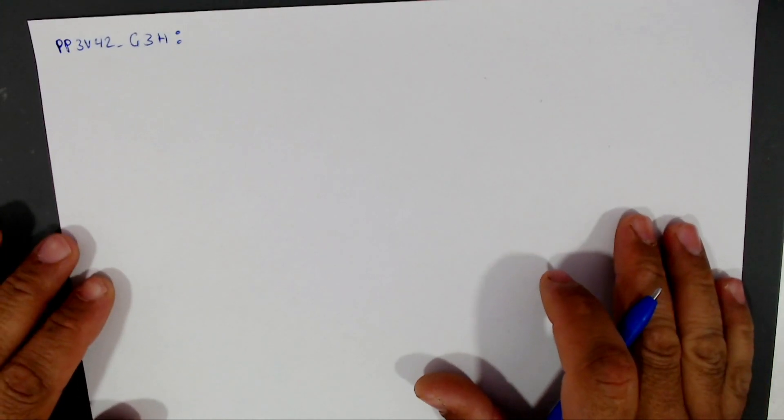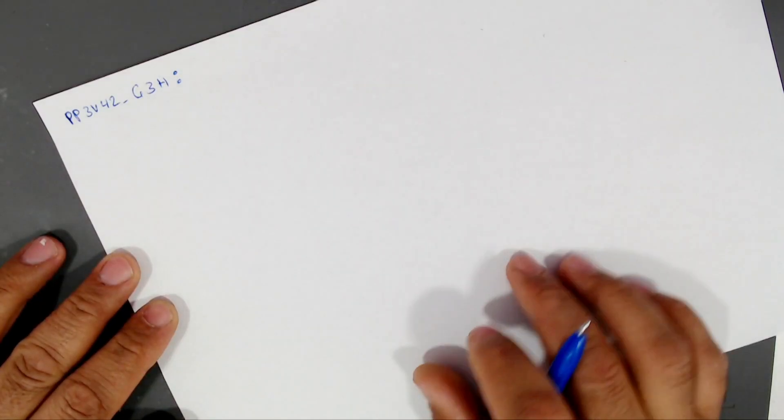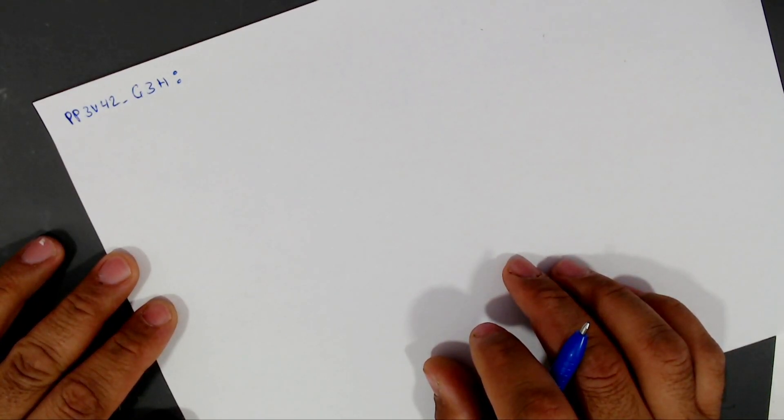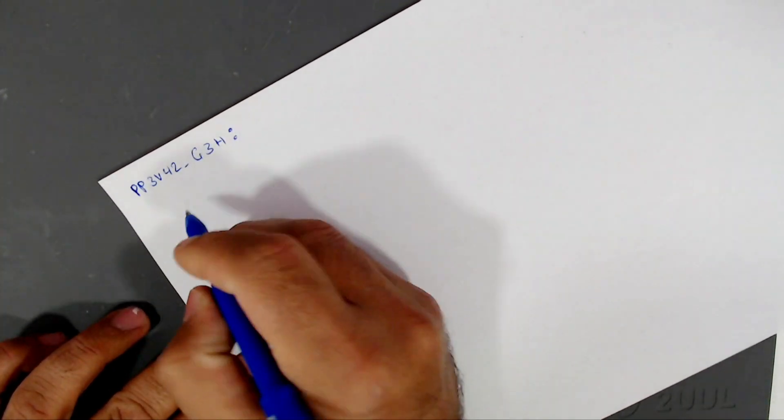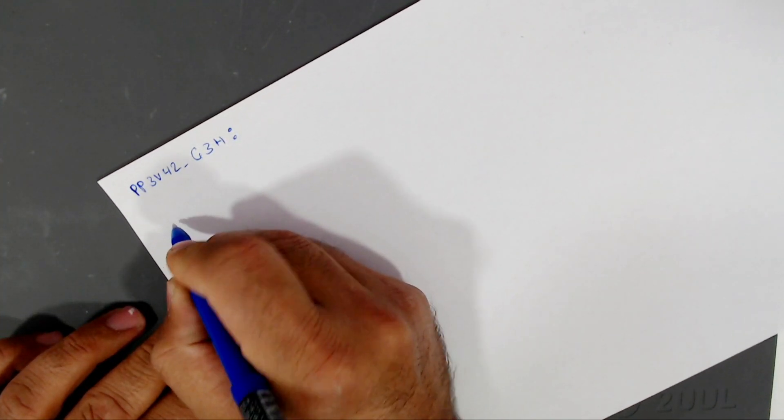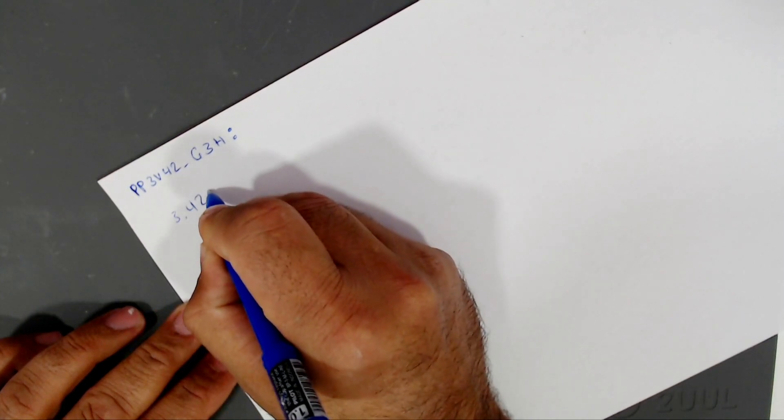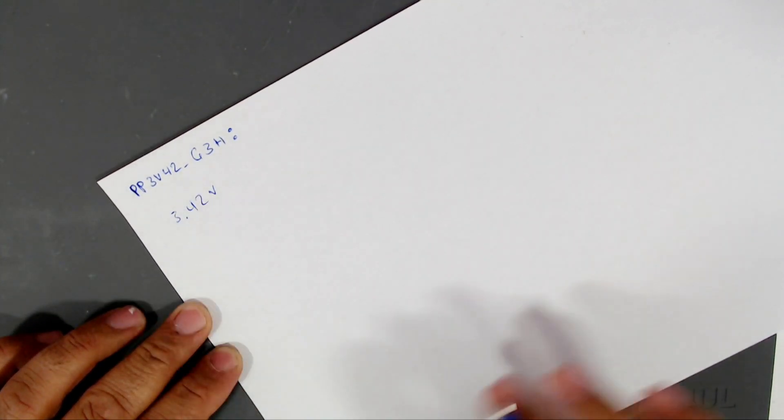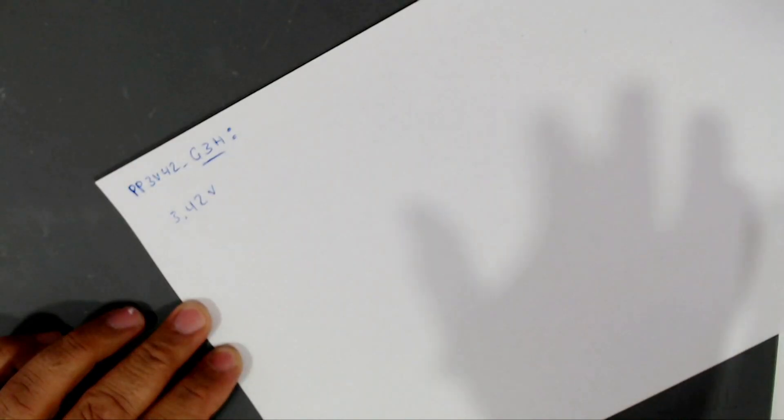Hello everyone, today I want to talk about the PP3V42G3H power rail from MacBook motherboard. What does this PP3V42G3H mean? It means this rail works on 3.42V at G3 state which is completely off.